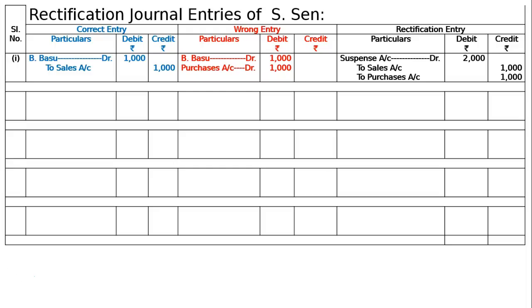Purchases was by mistake debited; it is to be cancelled by crediting purchases account Rs.1000 in the rectification entry. Being all other accounts and amounts correct, the suspense account is debited by Rs.2000. The rectification narration: goods sold on credit to B.VASU by mistake entered in the purchases book; B.VASU's account was correctly recorded — now rectified.